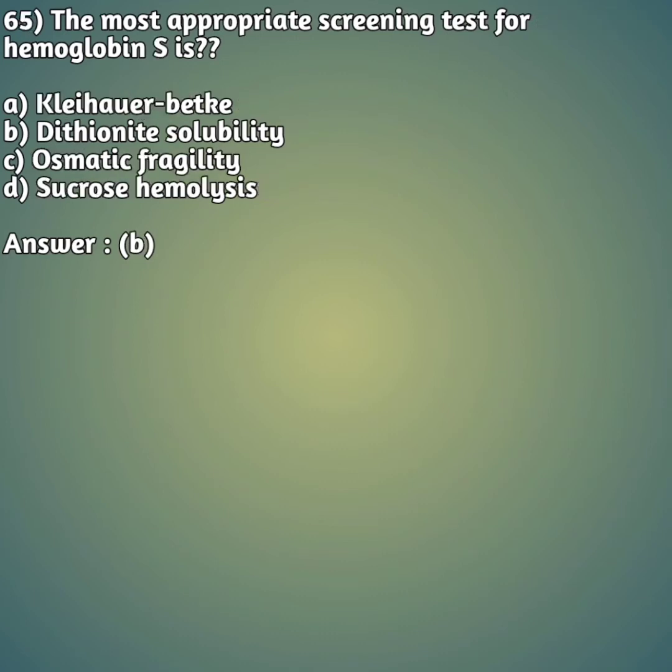Moving to our 65th question: the most appropriate screening test for hemoglobin S is - option A: Kleihauer-Betke test. Option B: dithionite solubility. Option C: osmotic fragility. Option D: sucrose hemolysis. The right answer is answer B - dithionite solubility.